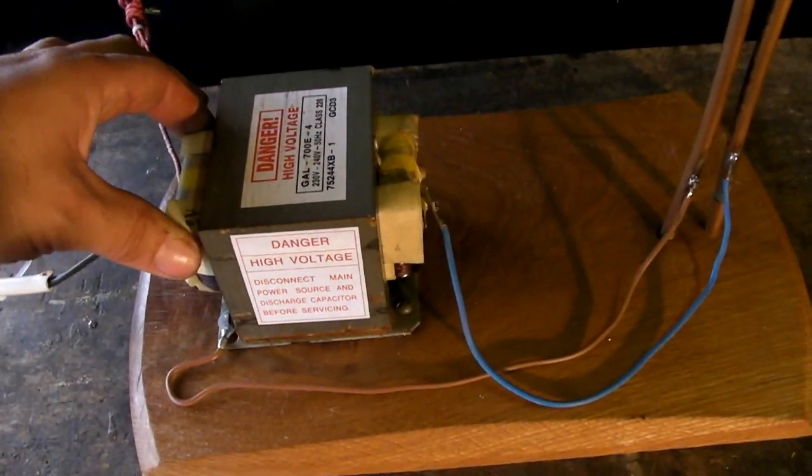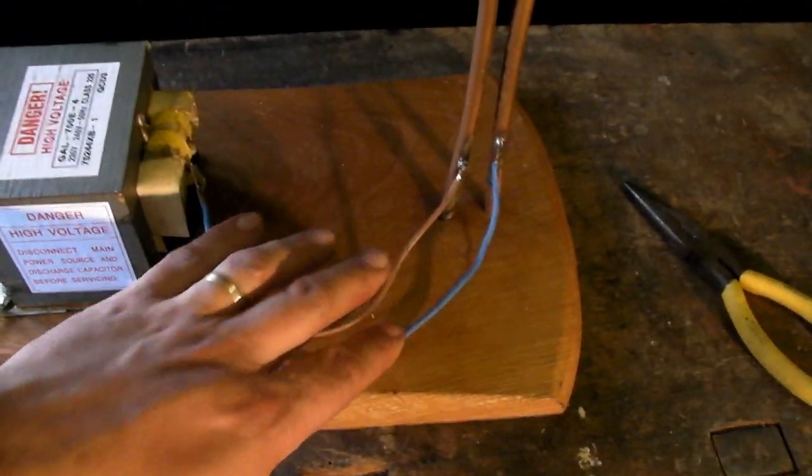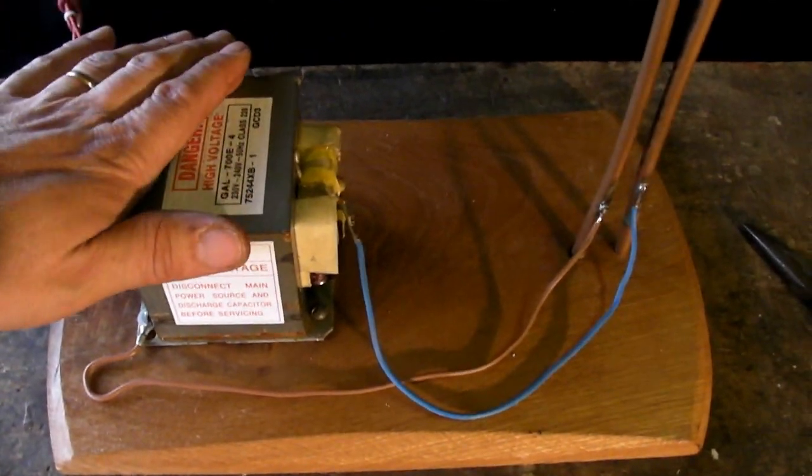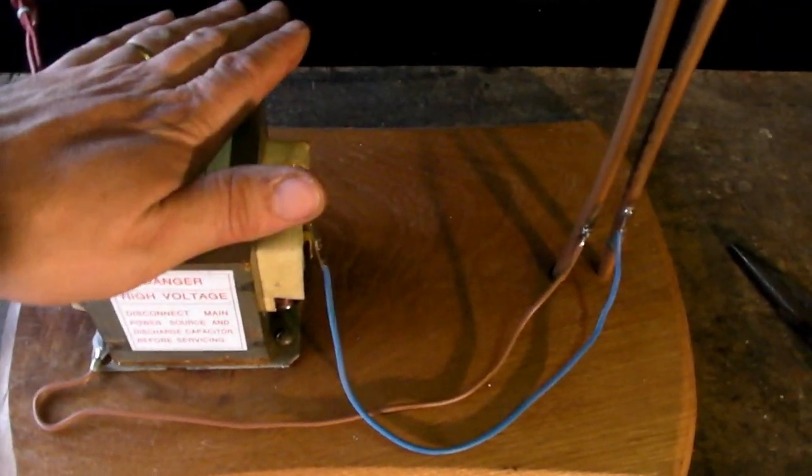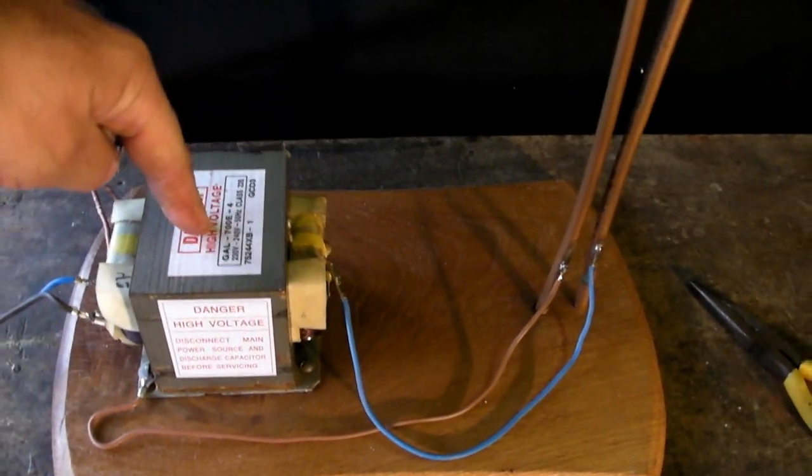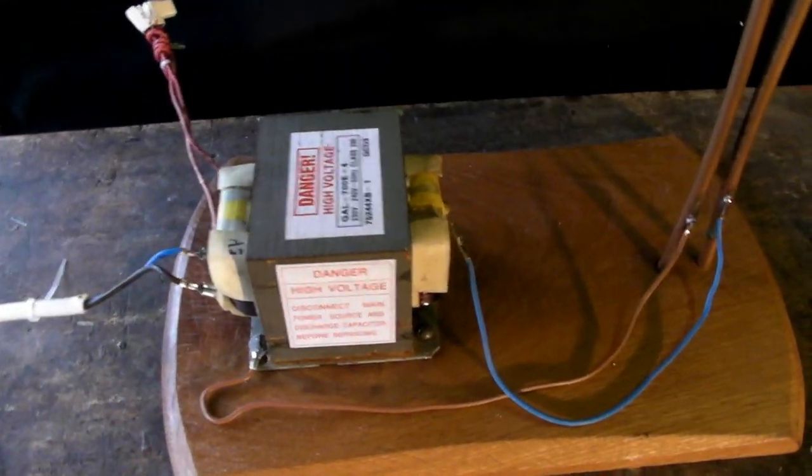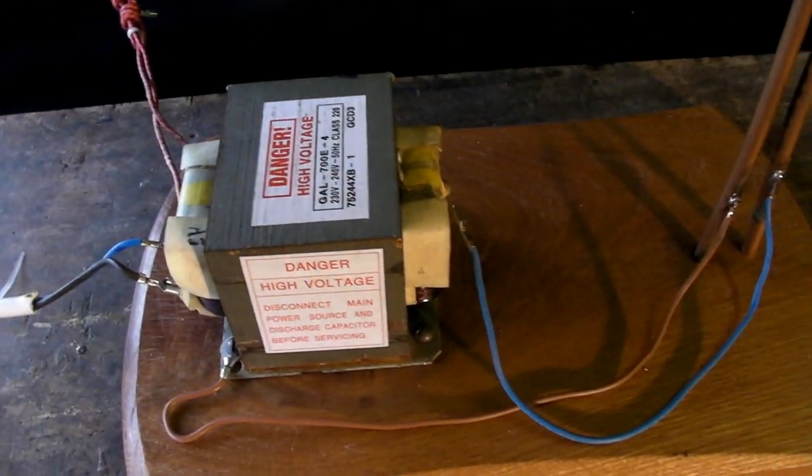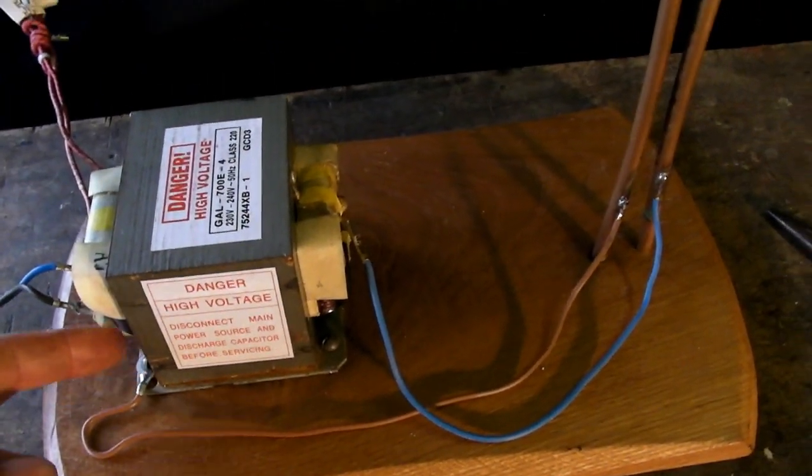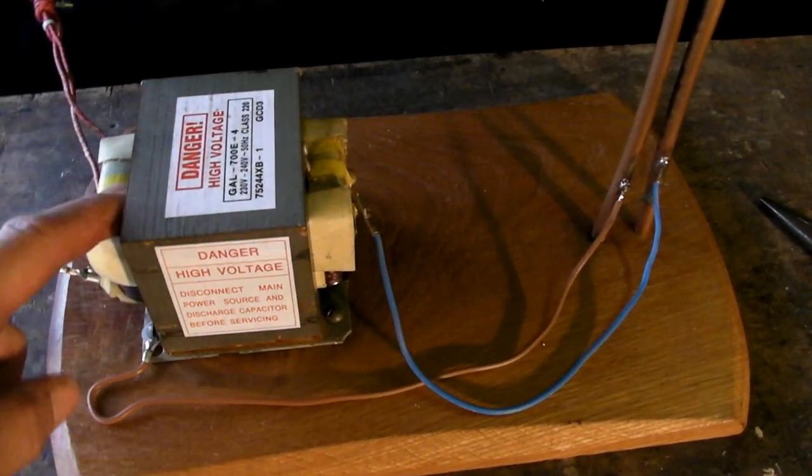You have the secondary coil which is connected to your output and you have an iron core. Now the iron core is actually this thing here. It actually penetrates through the coil in the middle there. And the purpose of the iron core is to transmit the magnetic field from the primary coil to the secondary coil.